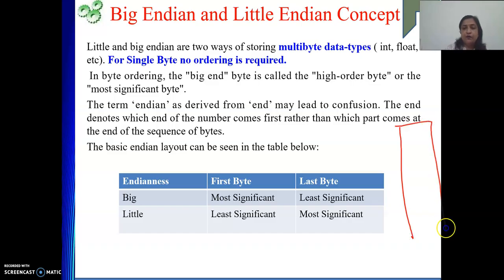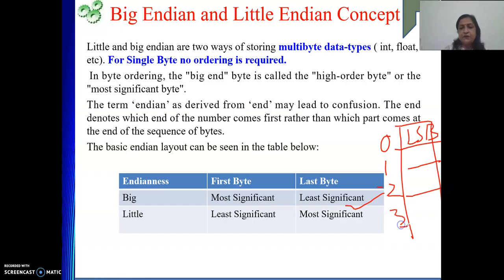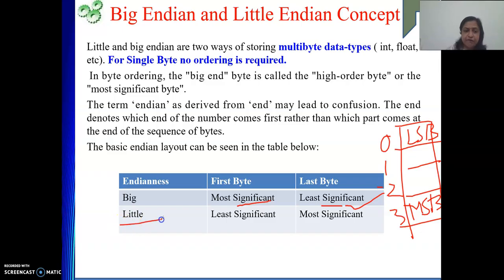In the case of little endian, the lowest byte — the LSB — will be stored first at the lowest address. Then the next byte, then the next, and the MSB will be stored at the highest address. These are the two orderings of bytes.